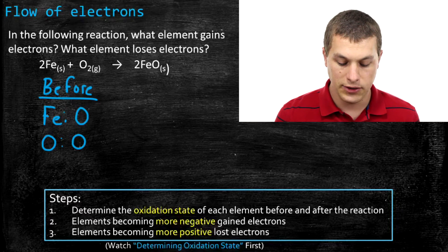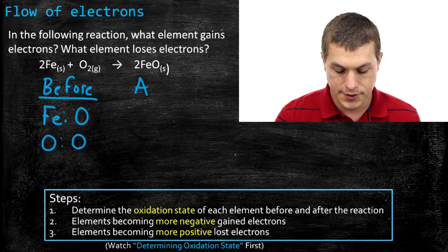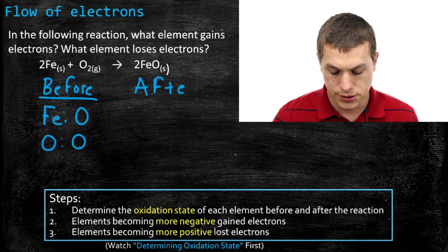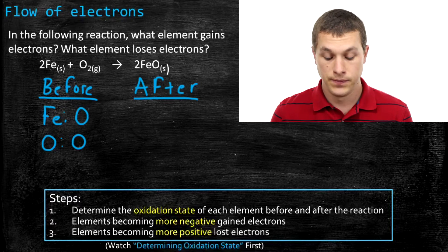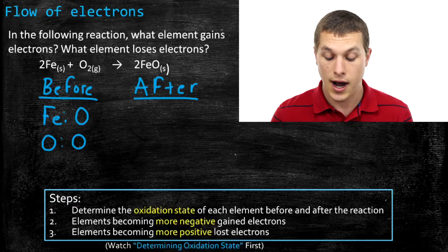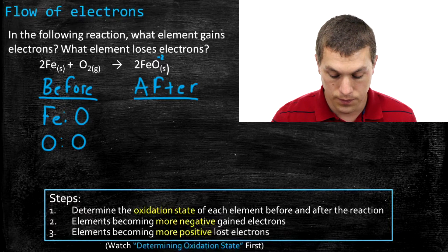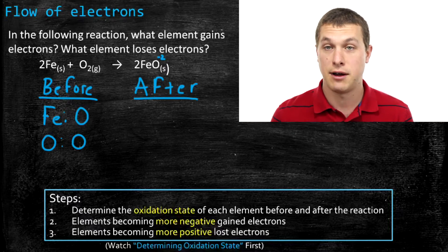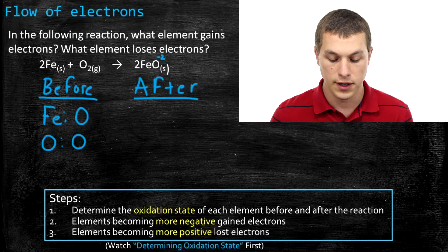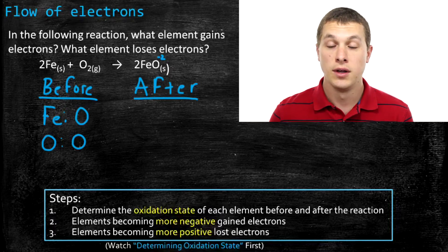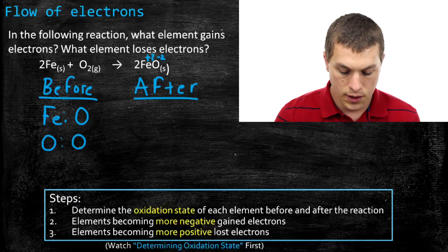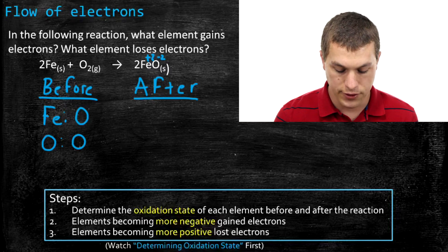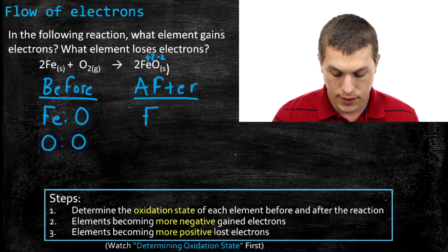Now I'm going to look at the oxidation state after the reaction on my product side. Here we see iron oxide, and I know I can assign the oxidation state of minus two to oxygen. Since oxygen is minus two and that's a neutral compound, I know that my iron must be plus two. So I've determined the oxidation state of iron and oxygen after the reaction: iron is plus two, and oxygen is minus two.